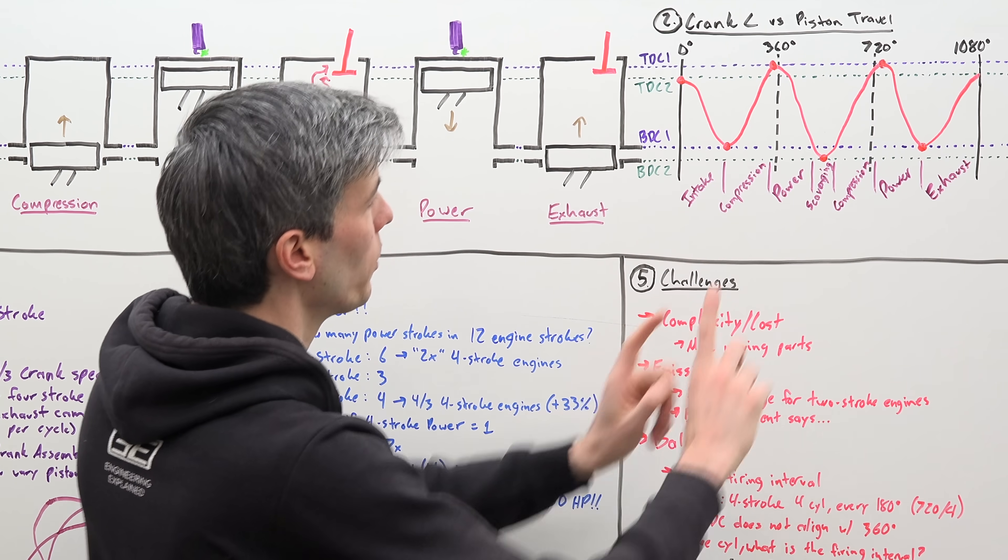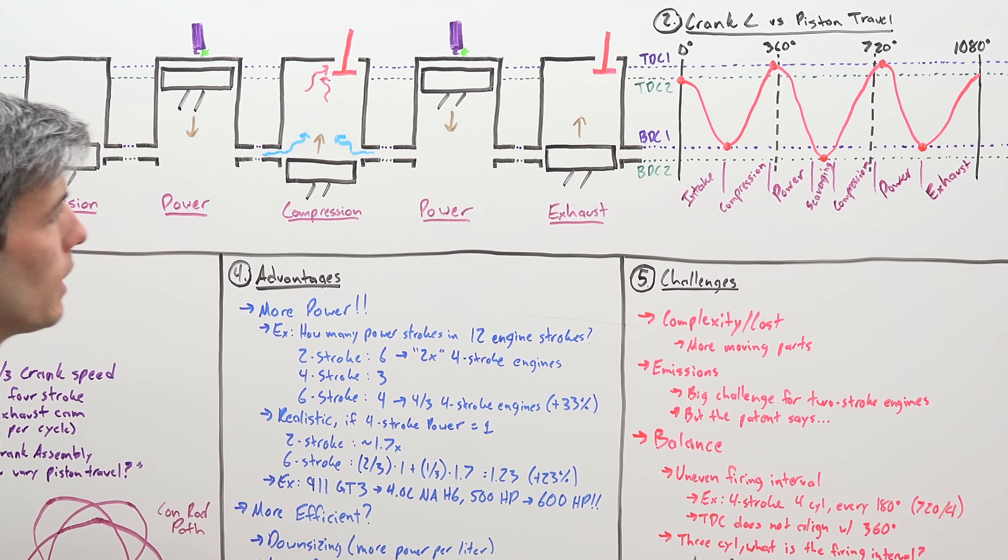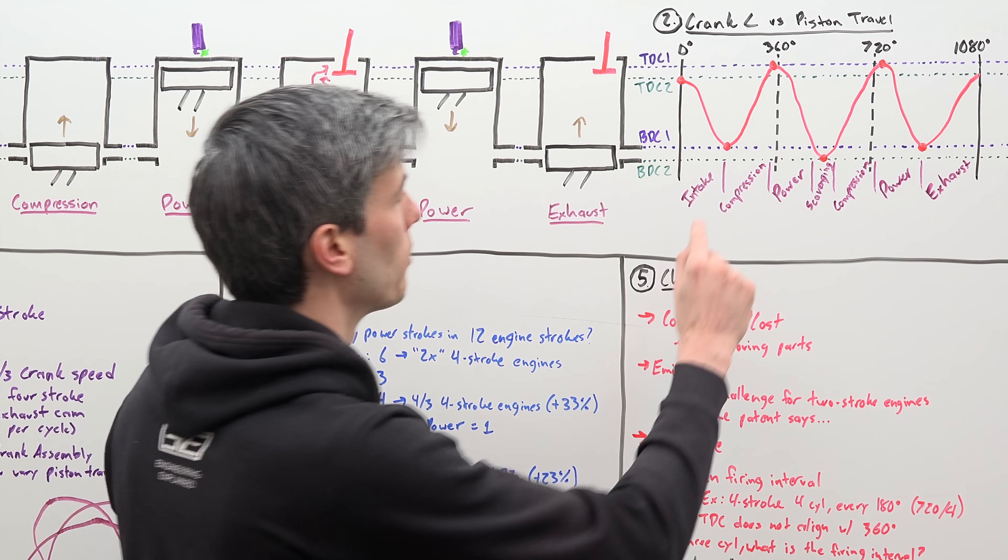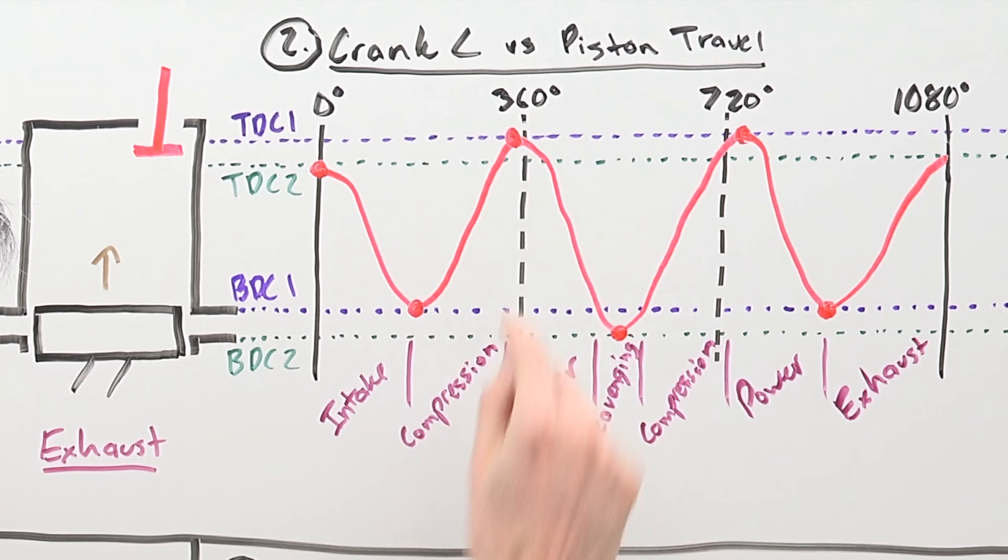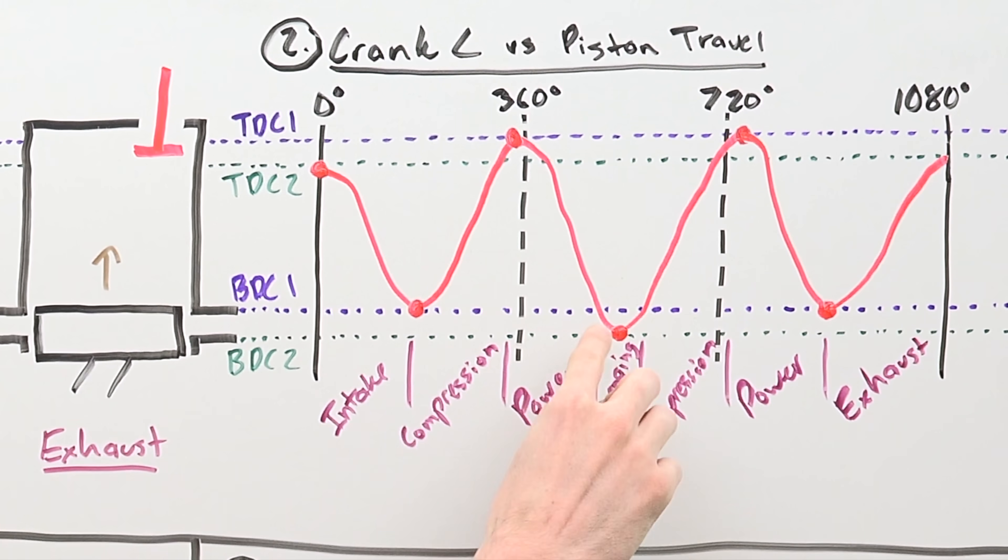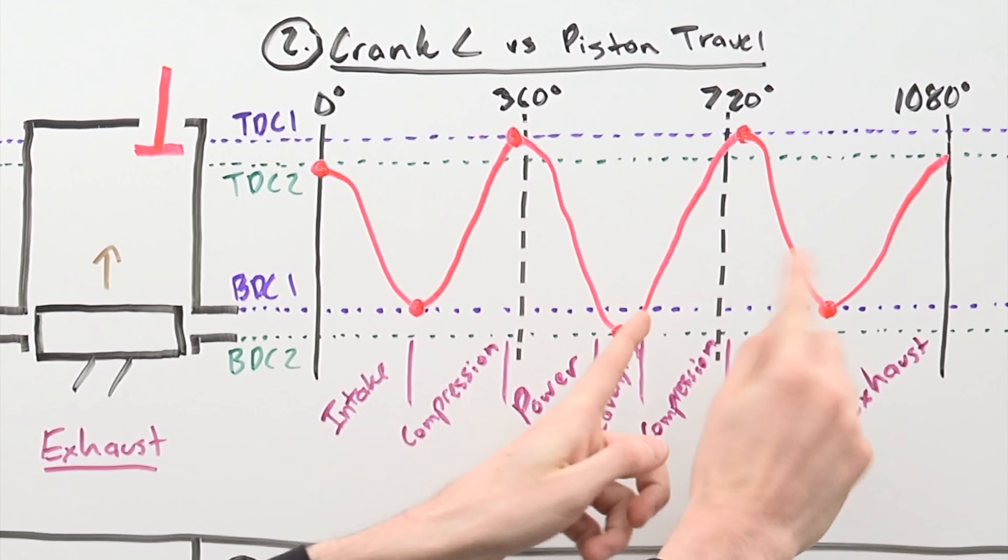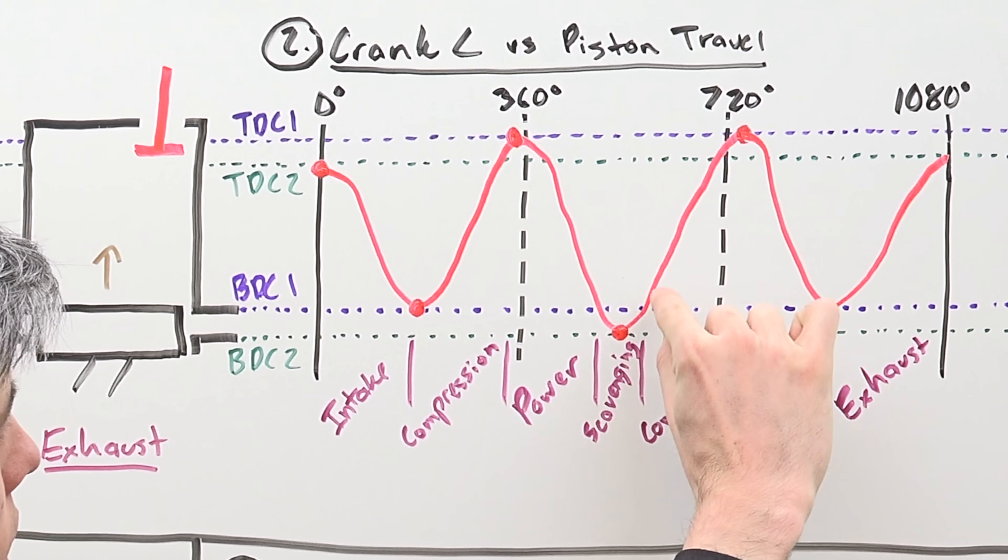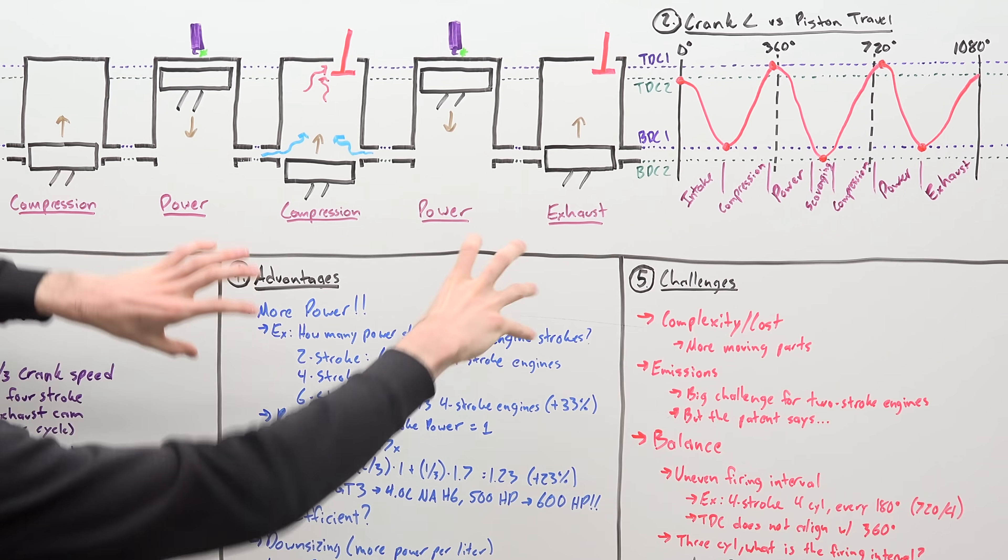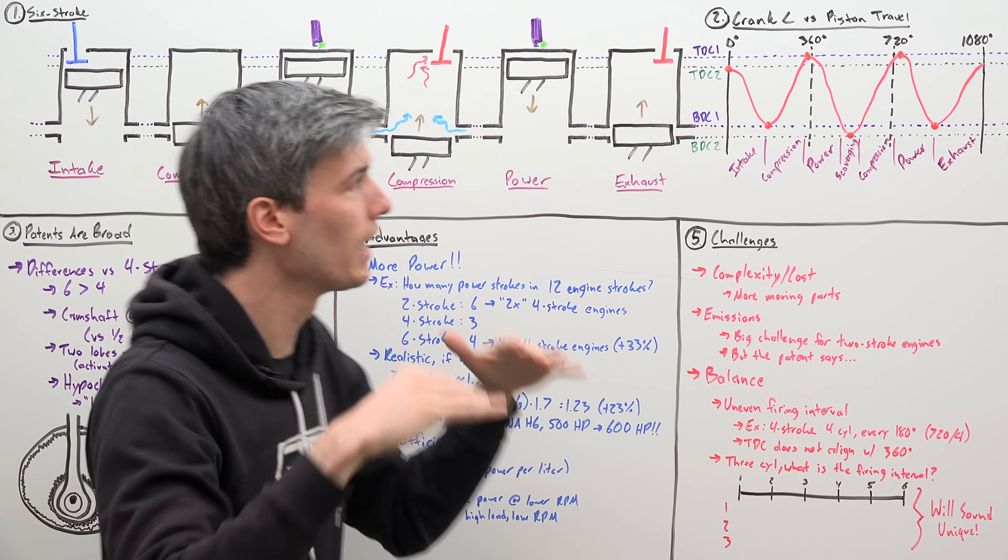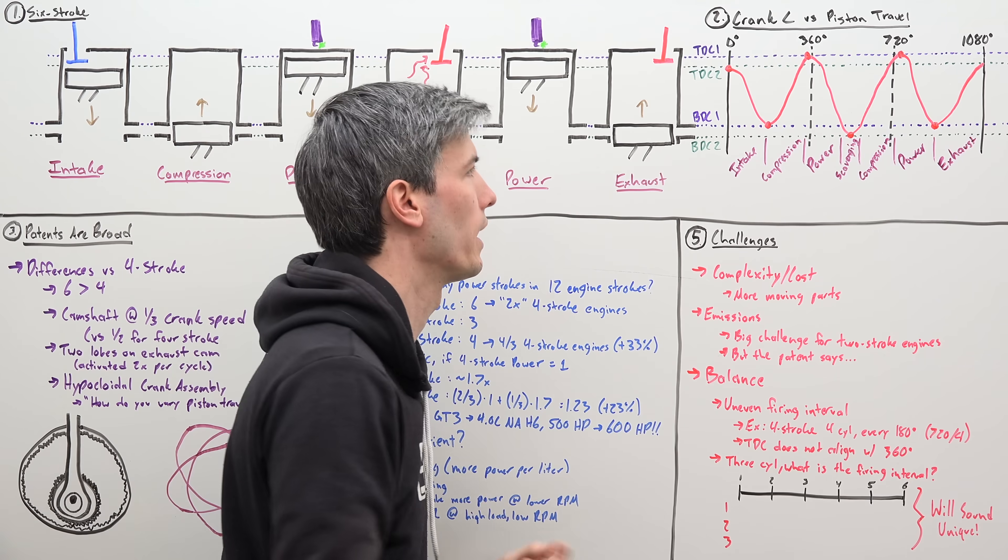And one thing that's important to realize here is that they're trying to keep the compression ratios the same. So you're not compressing while those ports are open. You're starting from this point right here, compressing all the way to the top there once again. So they're trying to make sure that these power strokes are fairly even in how much power they are applying.